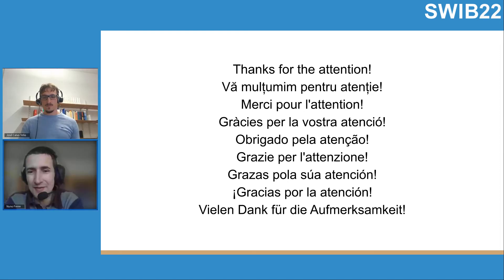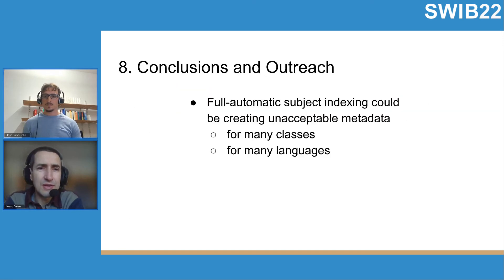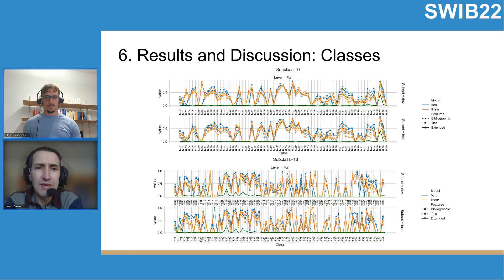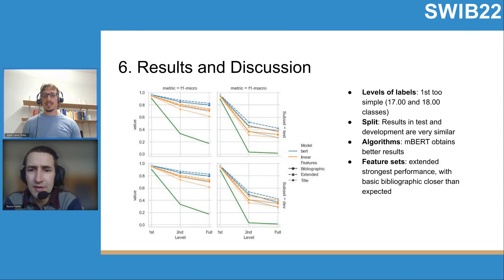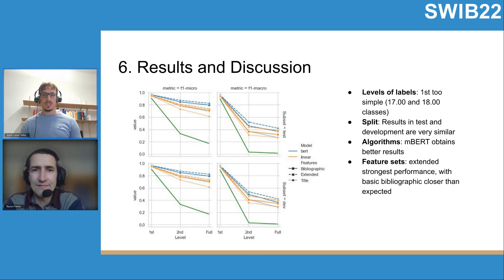Thank you very much, José. We have some questions from the audience. One question concerns your results slide: what is the green line in the results graph? The green line is the random baseline — this would be the result if we just followed the distribution of labels from the original training or test data and scrambled all the assignments. It is just to see how difficult the task would be.